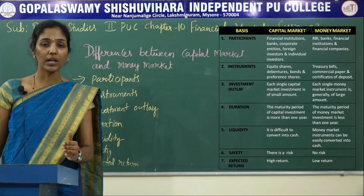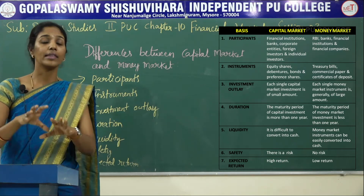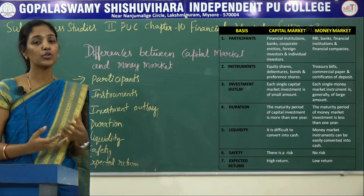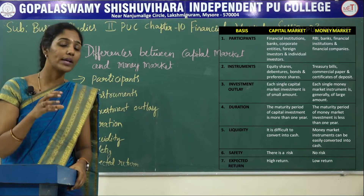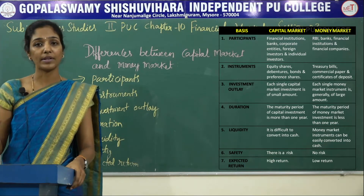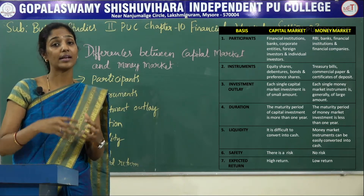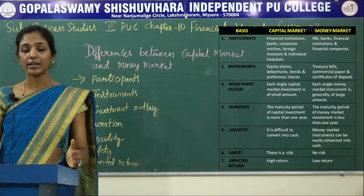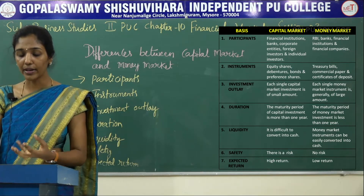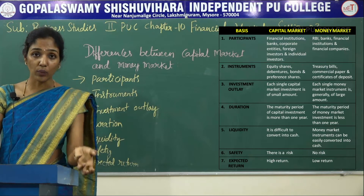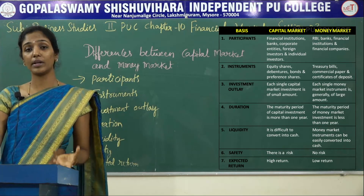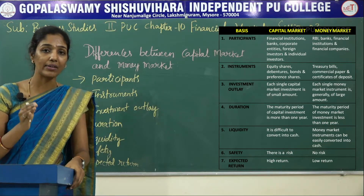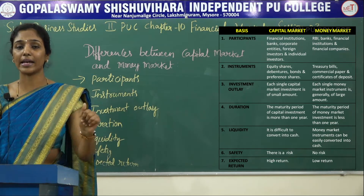The next difference is liquidity. Capital market provides an opportunity to investors to convert their shares or investment into cash at any time, though sometimes it is difficult to find a buyer. But in the money market, there is a specific mechanism — DFHI, that is Discount Finance House of India — which provides an opportunity to money market investors to convert their investment into cash at any time.